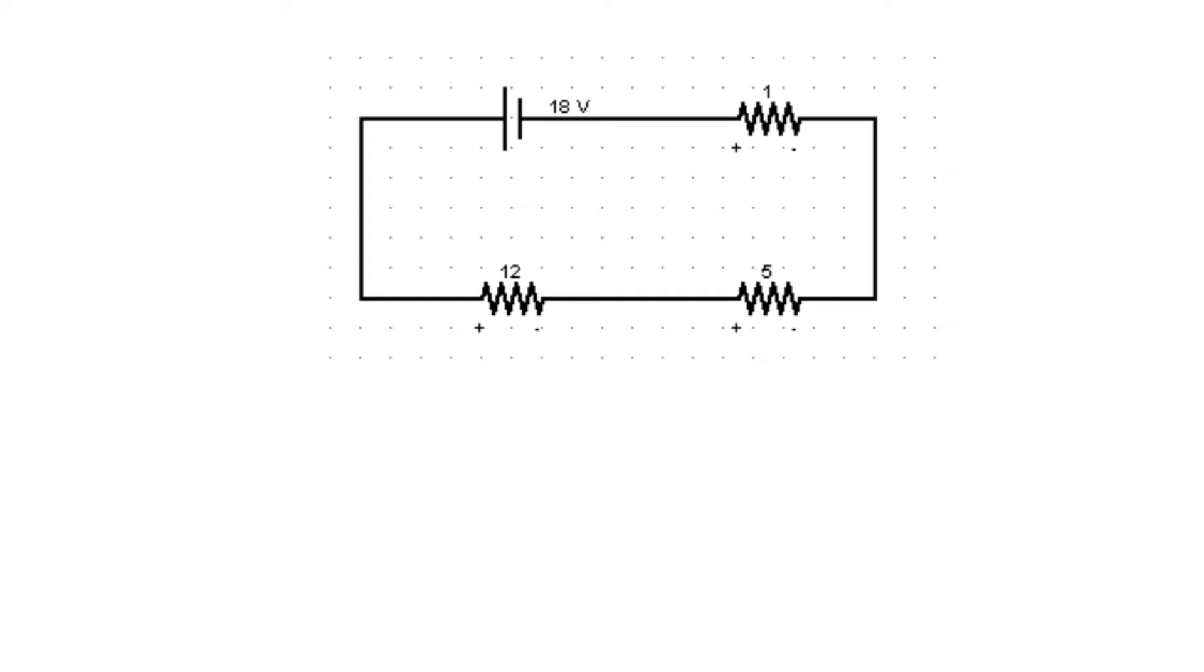Given this circuit diagram, we can say that the three resistors are connected in a series circuit. This is because if we have a current, let's say current I, this current I is the same for all my resistors.